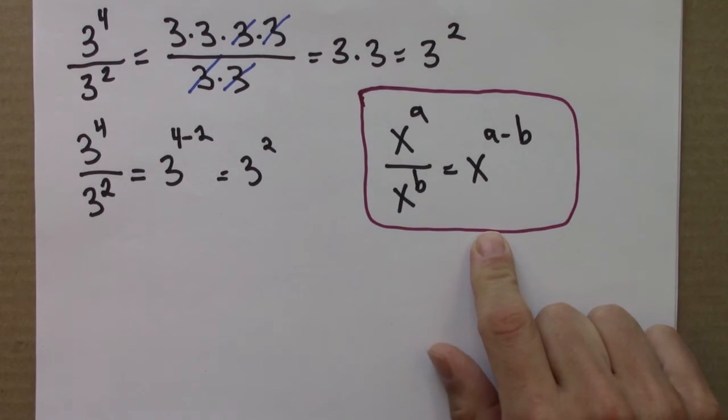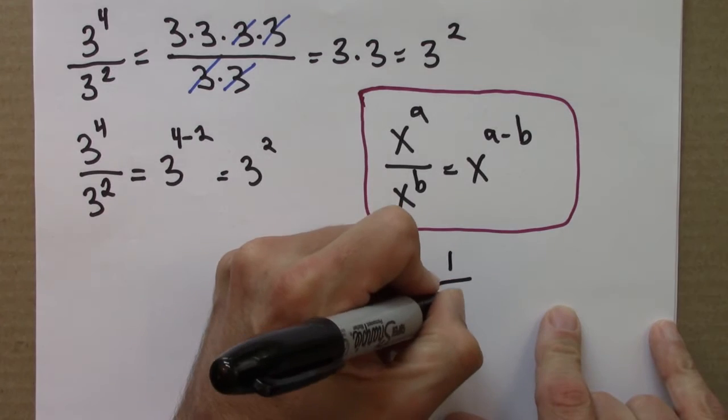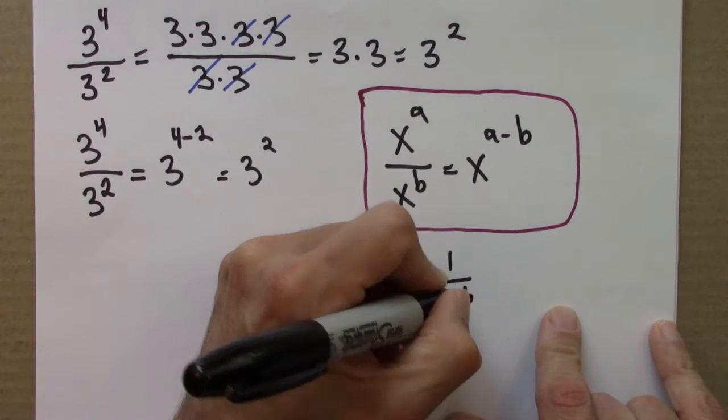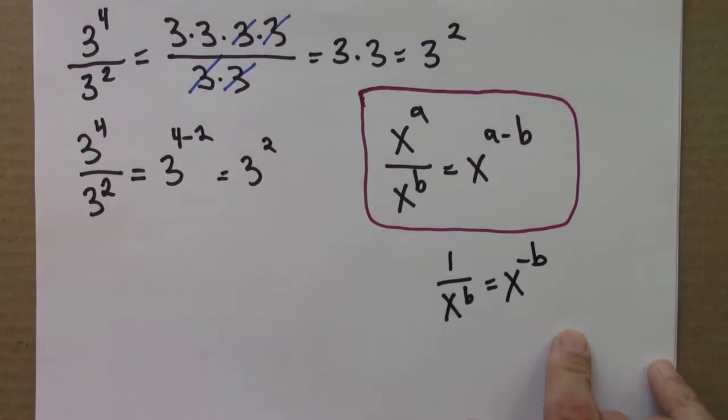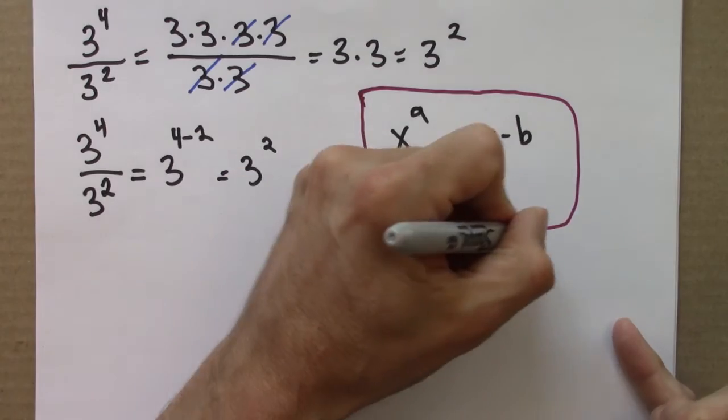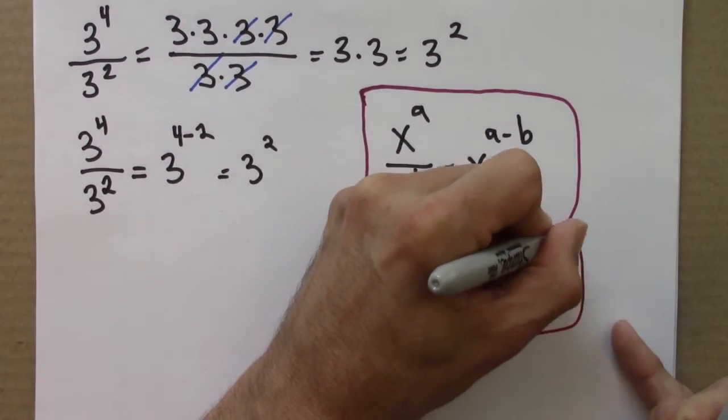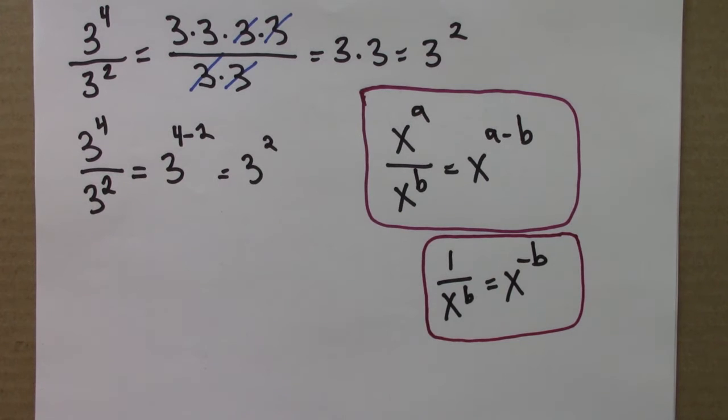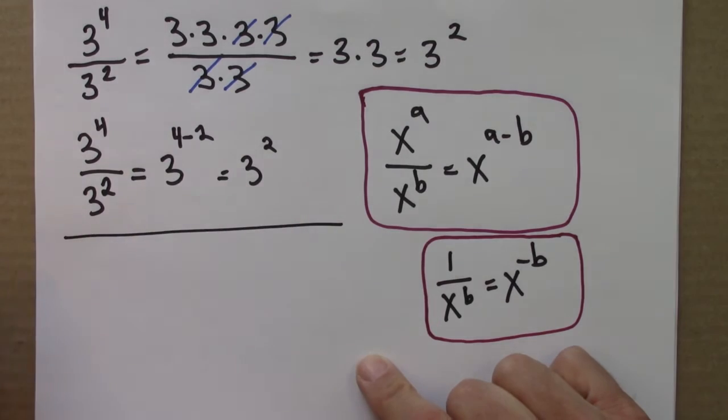And it follows from this that 1 over x to the b is the same thing as x to the minus b. So that's another important property. This analysis tells us what negative exponents should mean. There are a number of ways to see that.